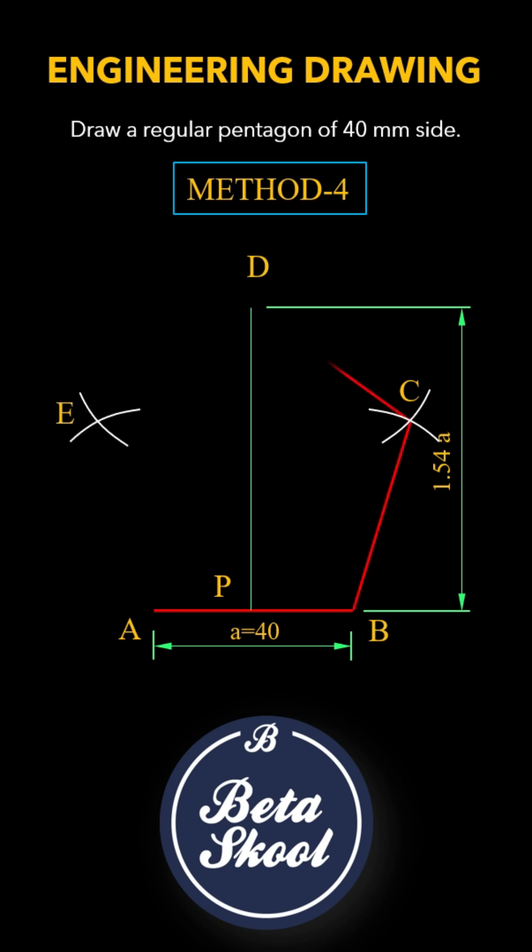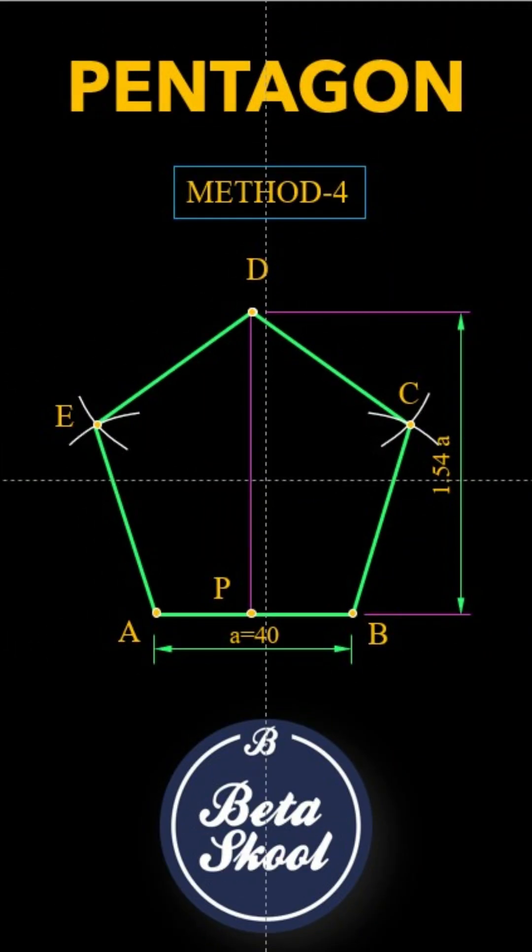Connect B, C, D, E and A in sequence. And that's it. We've successfully constructed a regular pentagon using another simple method.